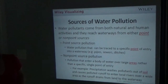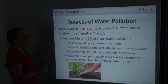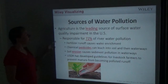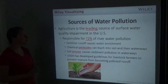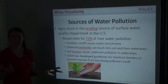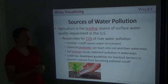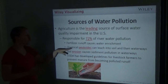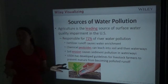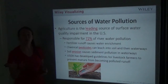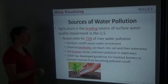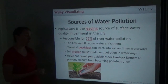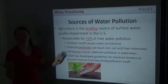Agriculture is actually the leading source of surface water quality impairment in the US, responsible for 72% of river water pollution. Fertilizer runoff causes water enrichment — that's the eutrophication we just discussed. Chemical pesticides can leach into soil and then waterways. Certain farming practices allow soil to erode quickly, causing sediment pollution in waterways. The USDA has developed guidelines for livestock farmers to prevent manure from becoming polluted runoff.